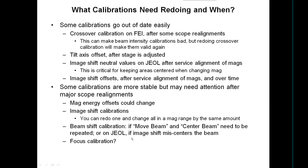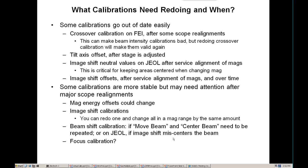The beam shift calibration could also go out. If you see that the move beam or center beam functions need to be repeated, or on JEOL if the beam gets off-centered during an image shift, that probably means the beam shift calibration is not good — on JEOL the program has to independently shift both the beam and the image using this calibration, so it is critical there. The focus calibration tends to be stable as long as alignments are the same, but people have raised reasons why it might go bad, and some individuals may need to do their own calibrations.